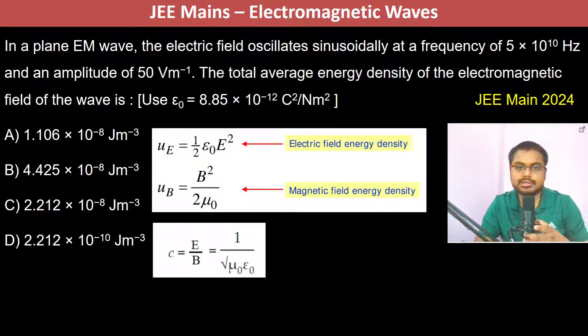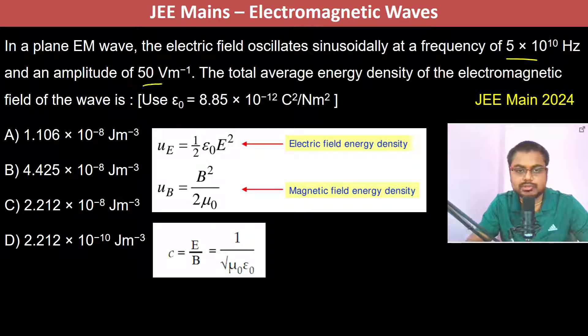In a plane electromagnetic wave, the electric field oscillates sinusoidally at a frequency of 5 × 10¹⁰ Hz and amplitude of 50 Vm⁻¹. The total average energy density of the electromagnetic field is to be found.